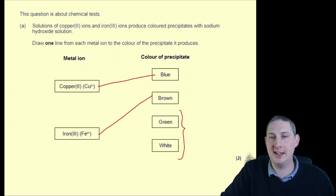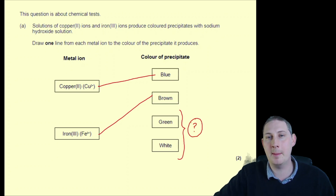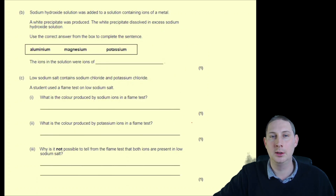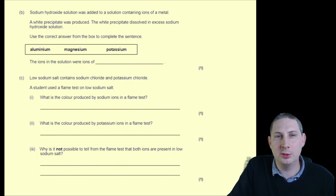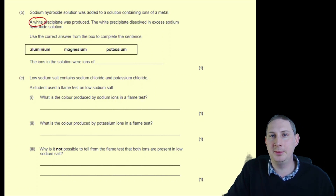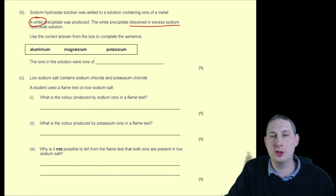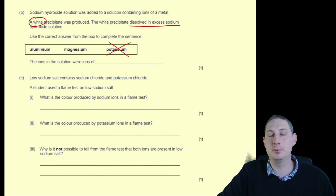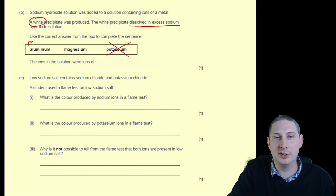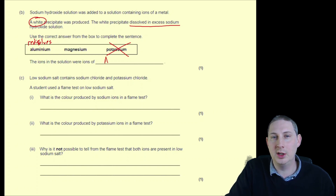What produces a green precipitate? What produces a white precipitate? If you don't remember, go back and have a look at last lesson. Sodium hydroxide solution was added to a solution containing iron(II) ions — a white precipitate was produced. That white precipitate dissolved in excess sodium hydroxide. Both aluminium and magnesium produce a white precipitate, but only aluminium redissolves, so the ions in the solution were aluminium.